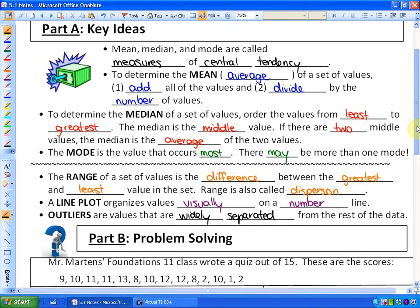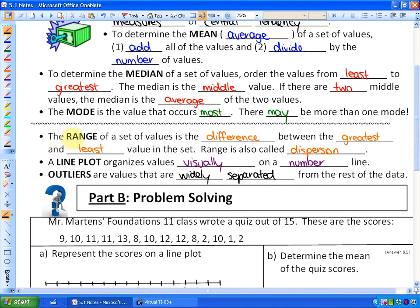The last three definitions, and then we will do one example, is the range. The range of a set of values is the difference between the greatest and least value in that set, and it's also called dispersion. If you're in my class, you can pause this video and take these notes on your own if you'd like to.